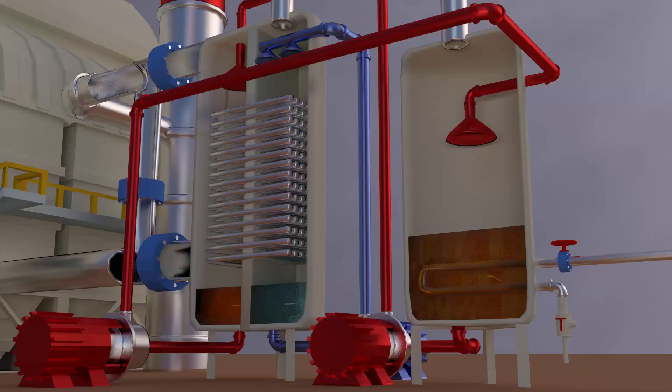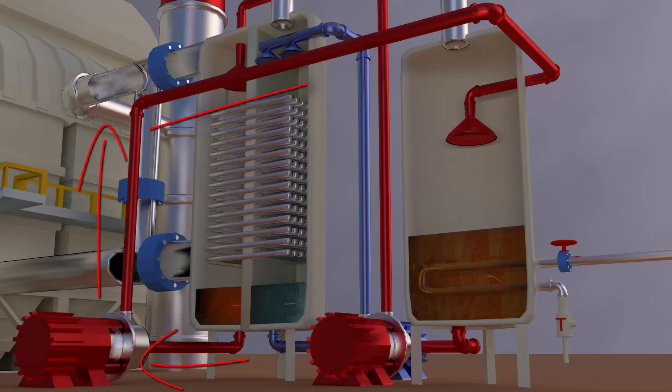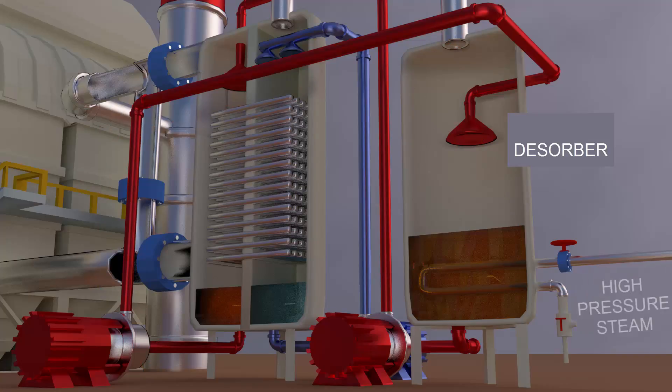As it passes through the absorption chamber, the brine becomes more dilute. In order to be reused, it must be regenerated to its original concentration. It is pumped to a still, where all the absorbed water is boiled out at atmospheric pressure. High-pressure plant steam is used to drive this boiling.